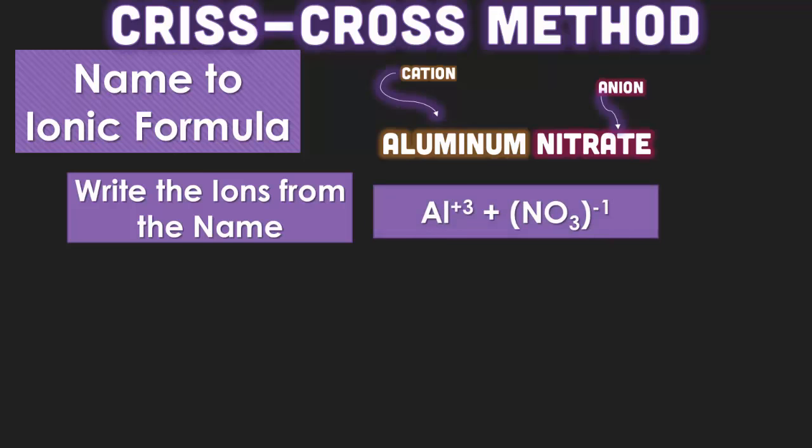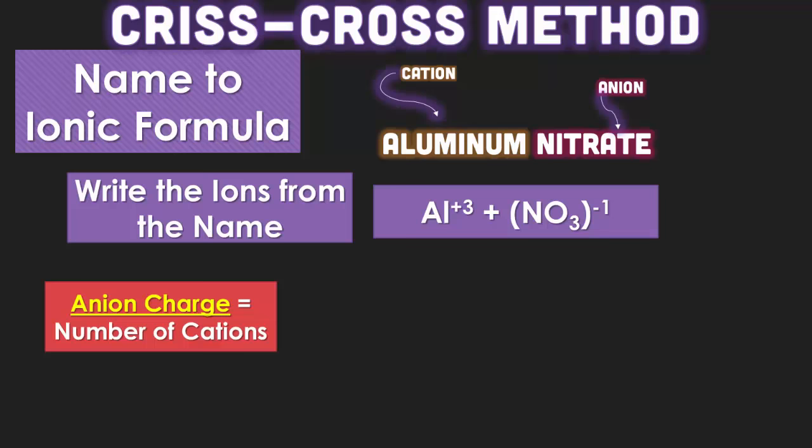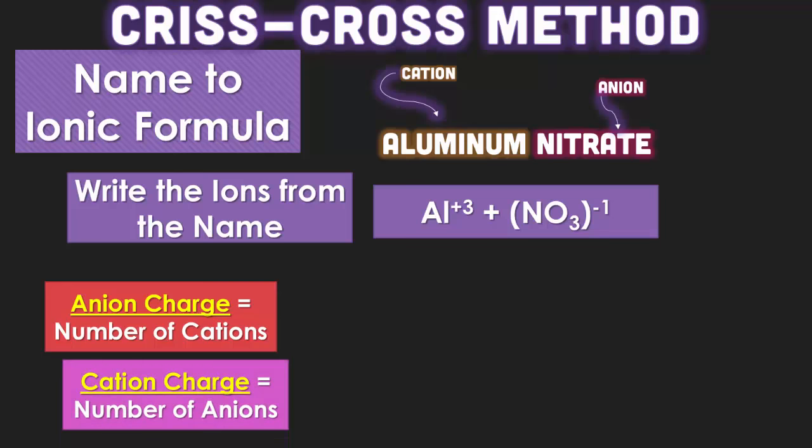Again, use your reference tables to find the actual ions. But aluminum is a positive 3 charge. Nitrate is the NO3 minus 1. The anion charge is going to end up equaling the number of cations, and the cation charge is going to equal the number of anions. So this is what we mean by the crisscross method.